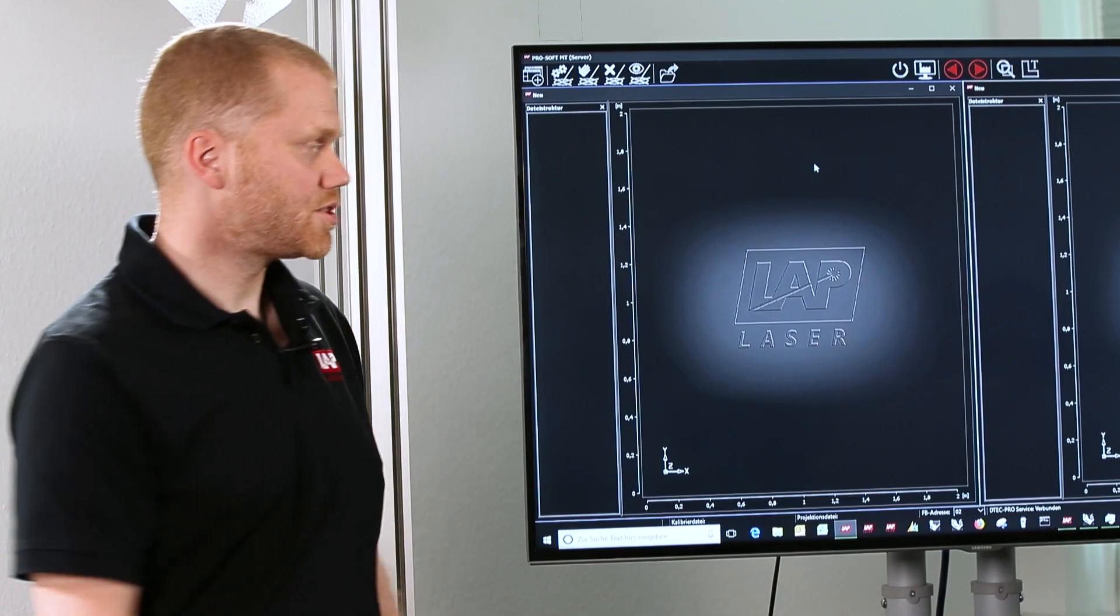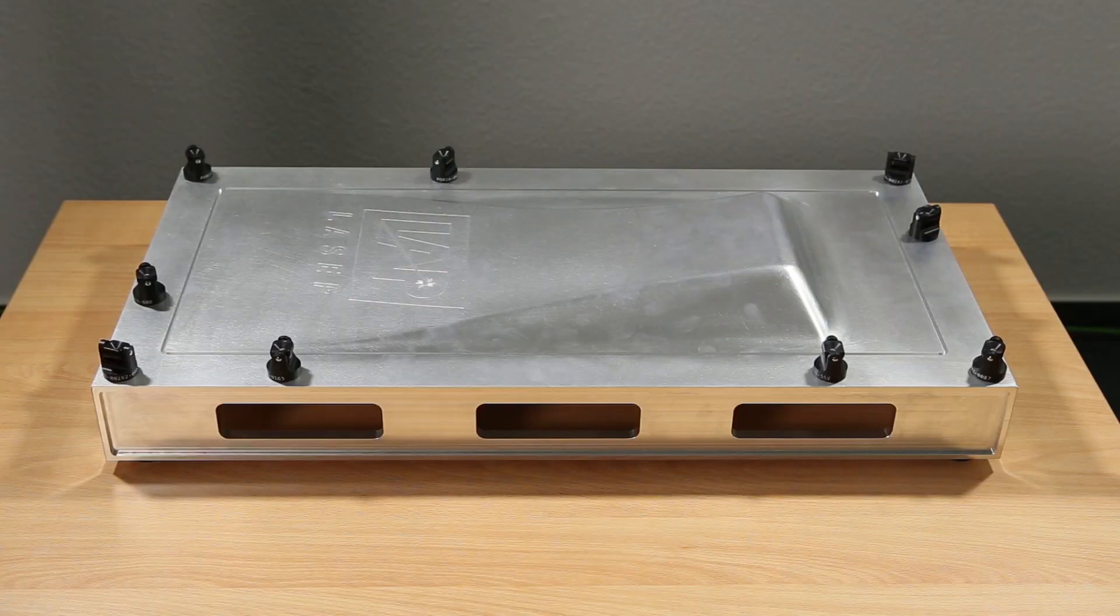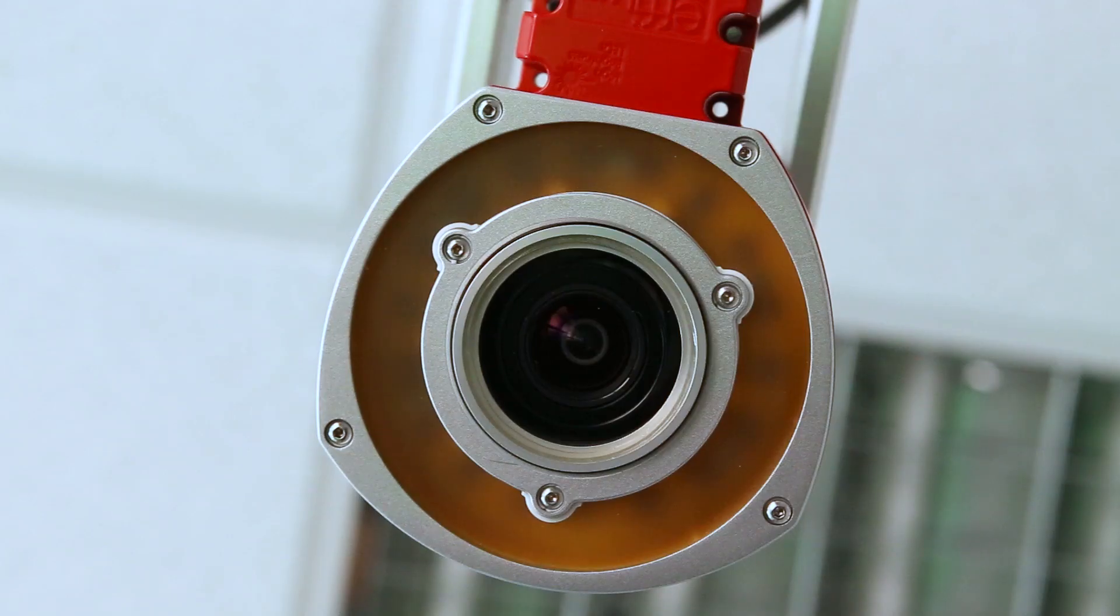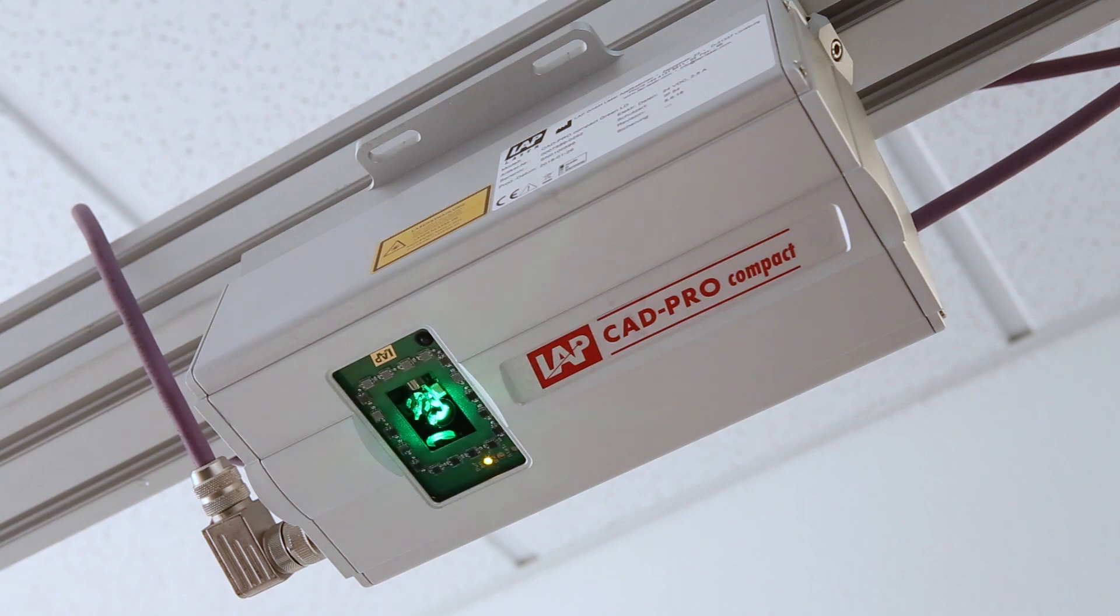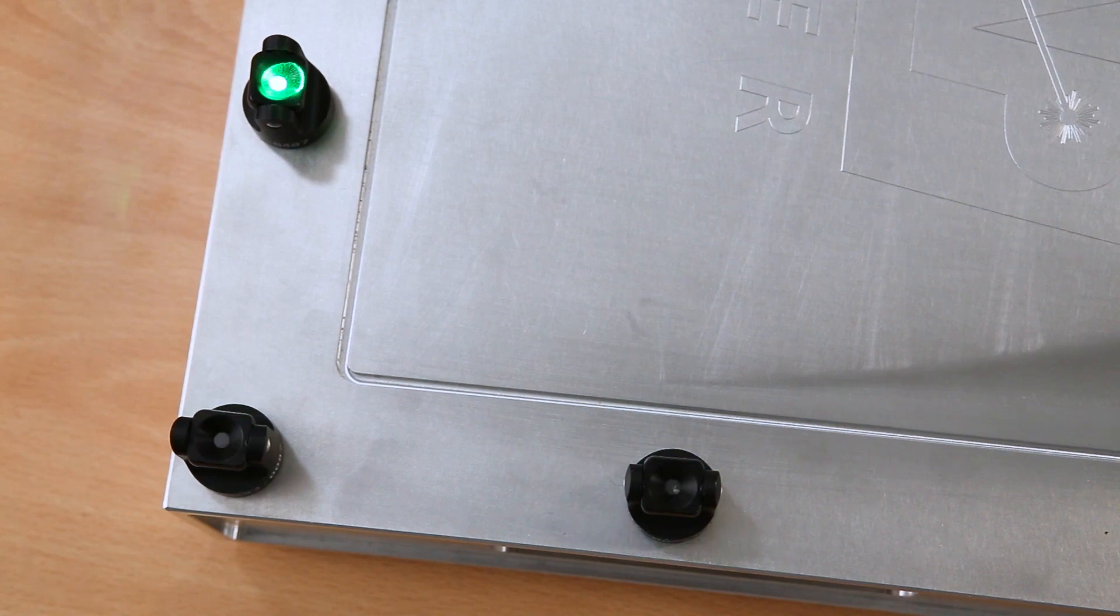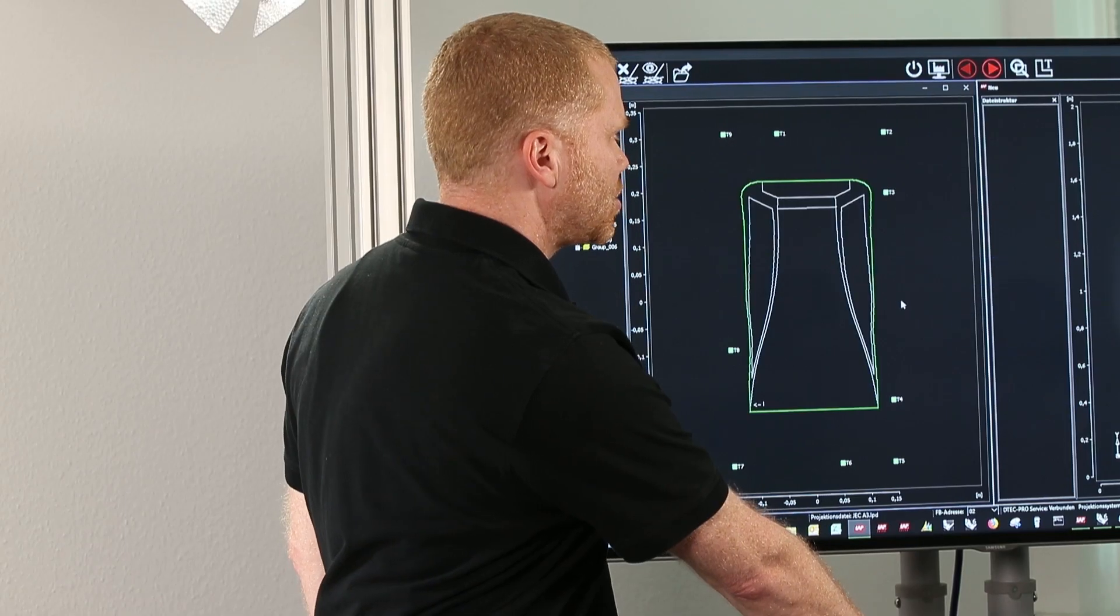I just now start the calibration in the ProSoft, selecting the calibration file. The camera is recognizing the position of the targets, gives this position to the projector, and the projector can calibrate directly. Open projection file which shows the projection lines.